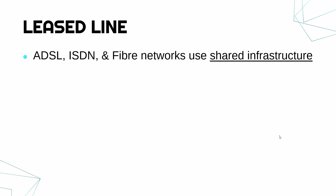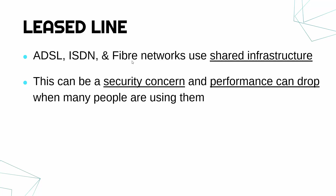A third alternative which most of us wouldn't have used, but which is used, is a leased line. A leased line isn't really a technology — it's more something you can do to a network. ADSL, ISDN, and fibre networks all use shared infrastructure, so even if you're paying for fibre you're still using the same cables as your neighbours. All your houses connect to one cabinet at the end of your road — it's all shared. This can be a security concern, and more importantly it affects performance: in the evenings or at weekends your internet speed may drop because many people are sharing the same ADSL, ISDN, or fibre lines.